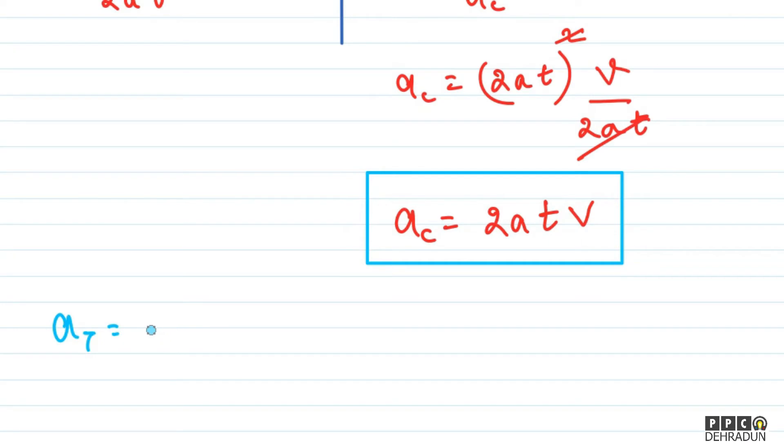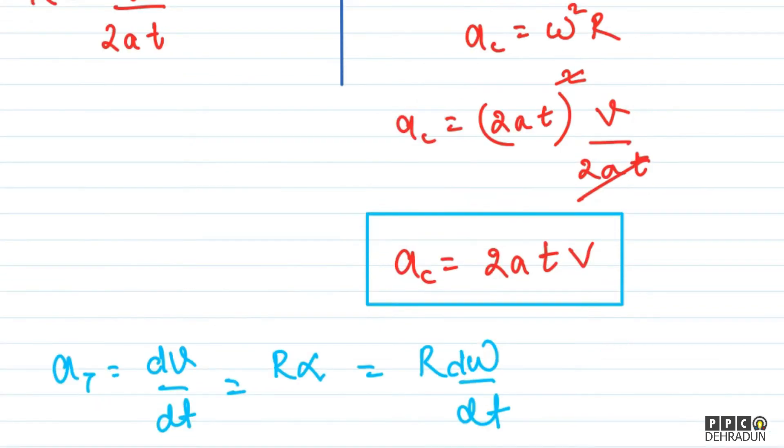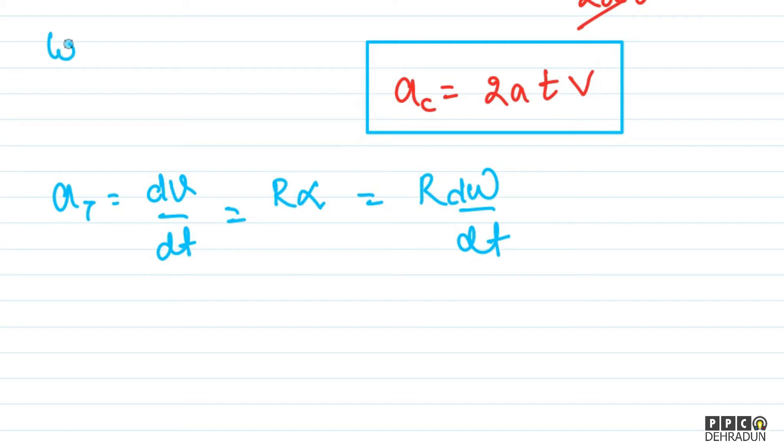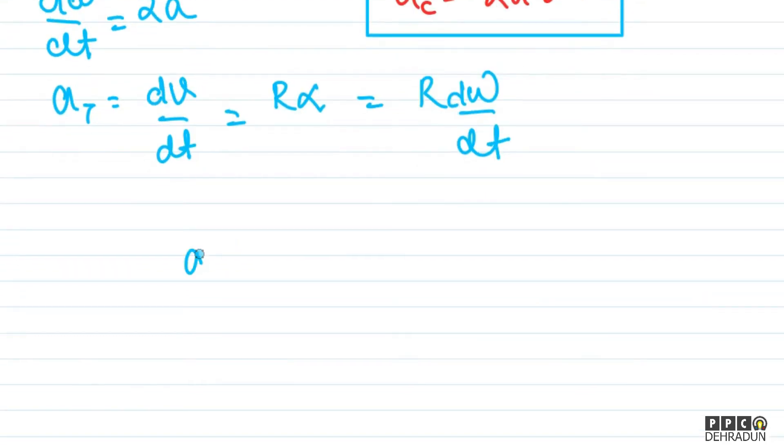Now we need to find a_tangential. a_tangential is dv by dt, which equals r times alpha, which equals r times d omega by dt. We have r and omega as a function of time. Omega equals 2at, so d omega by dt equals 2a.